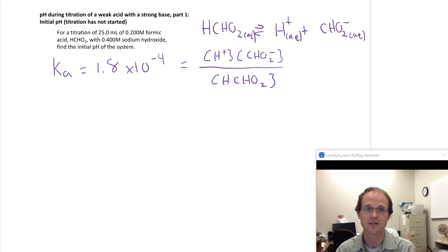How we find these concentrations anytime there's an equilibrium problem is we set ourselves up an ICE table. So I'm going to write the reaction. We've got HCHO2 going to H plus and CHO2 minus.